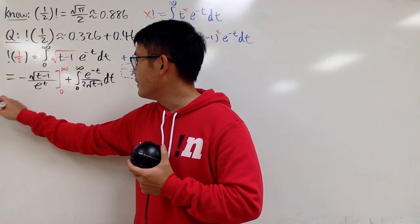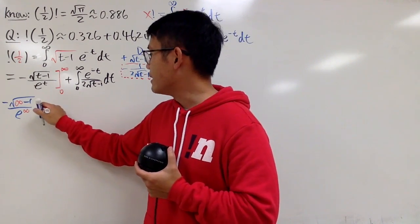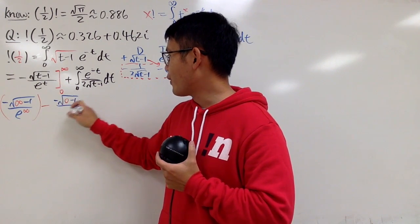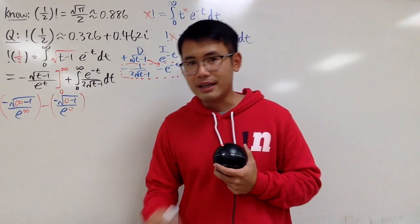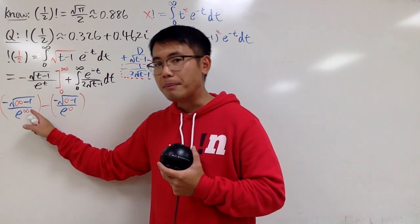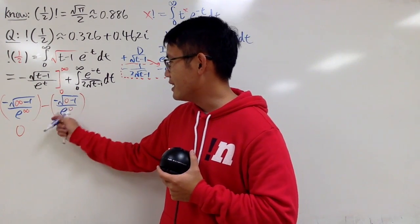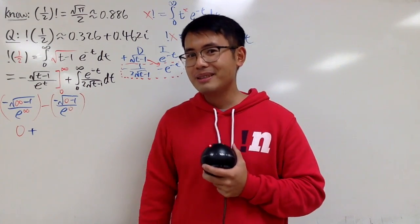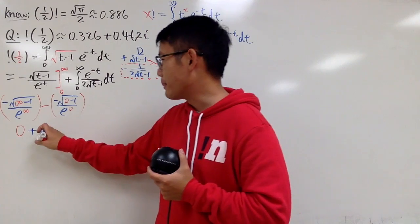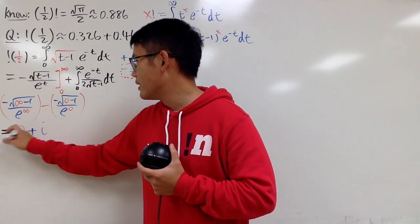Let's work this out. We have −√(∞−1)/e^∞ for the first part, then minus the second part: −√(0−1)/e^0. For the first part, the top gives −∞ but the bottom is e^(+∞), so this is just 0. For the second part, negative times negative is positive, and e^0 is 1. But inside the square root you have −1, so you get i — taking the principal square root gives i. So far we end up with i already.